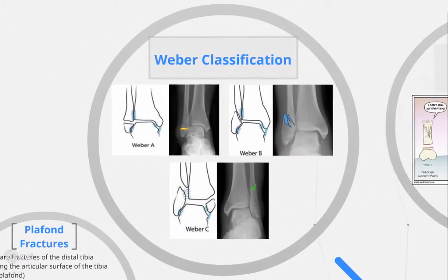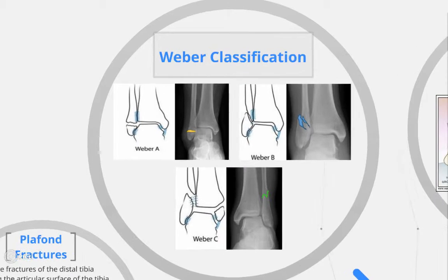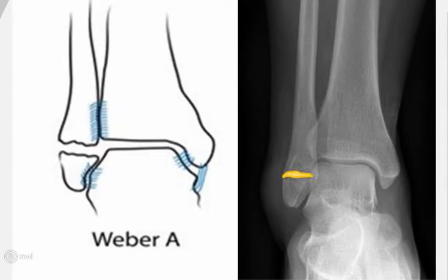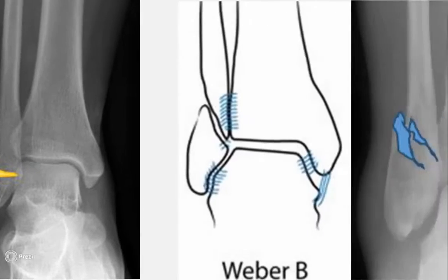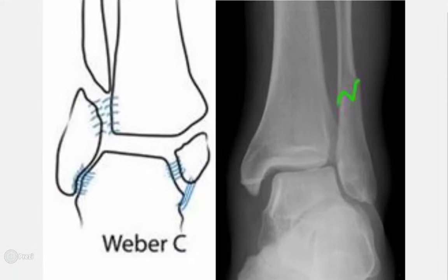Ankle fractures are classified according to the Weber ankle fracture classification. Type A: a transverse fracture through the fibula below the tibiofibular syndesmosis, which may be associated with an oblique or vertical fracture of the medial malleolus. Type B: an oblique or spiral fracture of the fibula at the level of the syndesmosis, often with an avulsion injury on the medial side. Type C: above the level of the syndesmosis — more severe, as these fractures are more unstable.